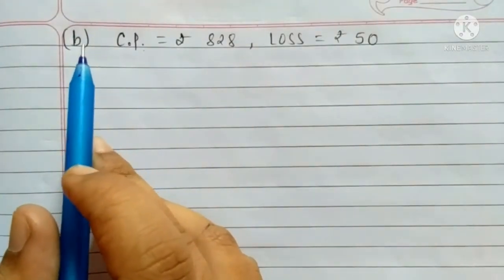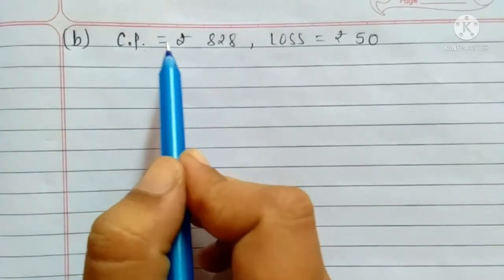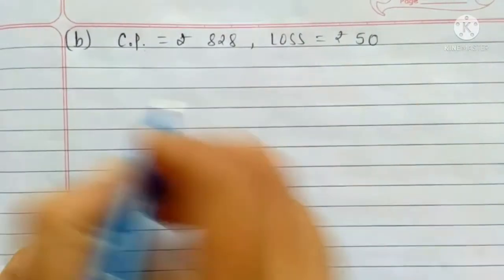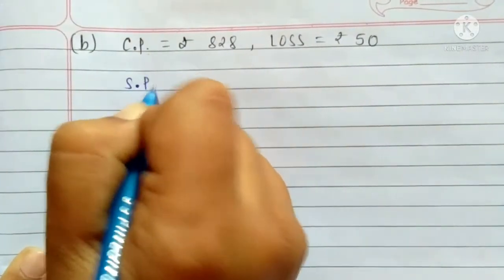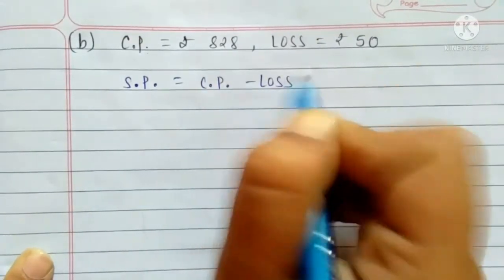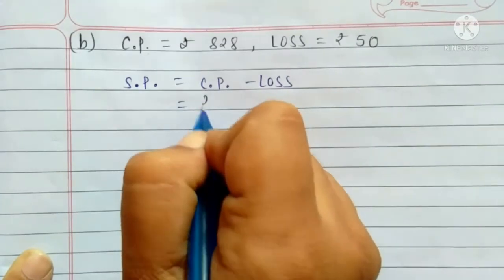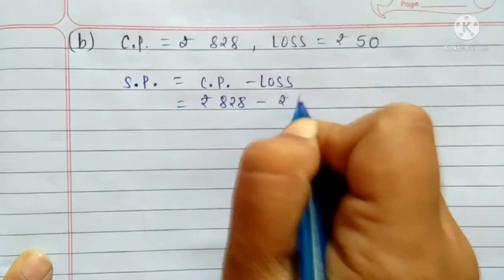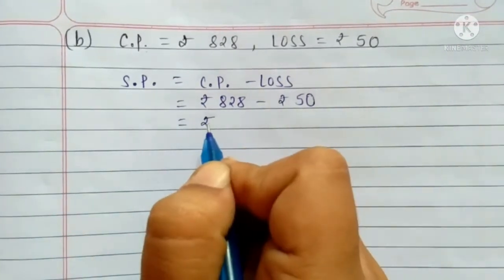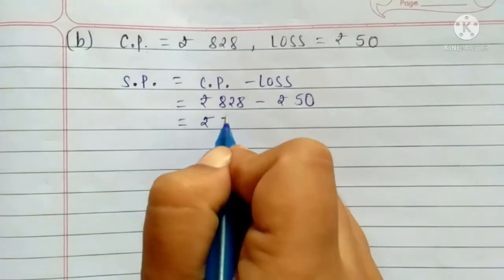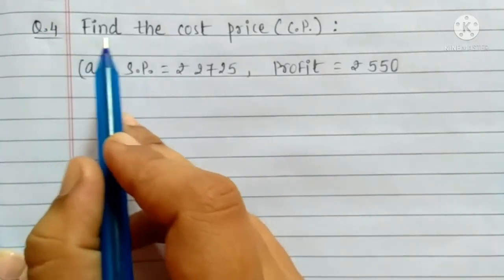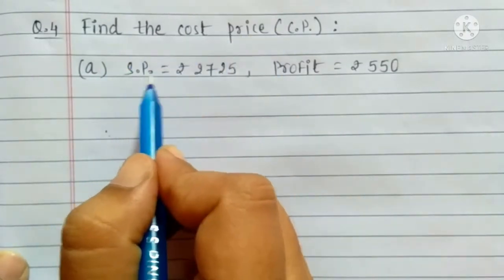B. Find selling price when cost price is equal to Rs. 828 and loss is equal to Rs. 50. Selling Price = Cost Price − Loss = 828 − 50. On subtracting, we get answer Rs. 788.